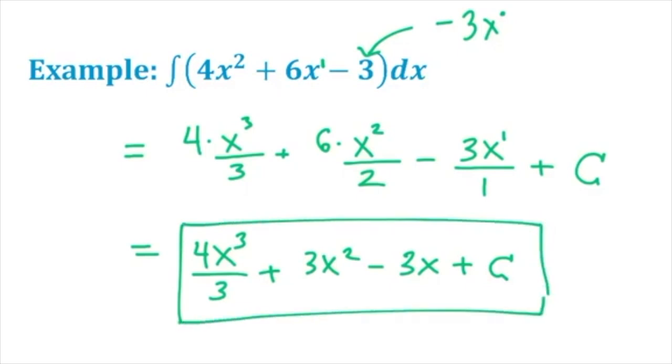I highly recommend checking your work when you do indefinite integrals like this because simply taking the derivative of each term, we should get back the same terms in the integrand. If you derived 4x³/3, I'd get 12x²/3, which simplifies to 4x². If I derived 3x², I would get back 6x. And if I derived -3x, I would get back -3. Note, deriving a constant is just 0, so that works too.